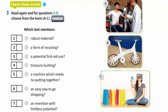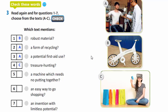Exercise 3. Read the text again and for the questions, choose from the text which text mentions: robust material – second; a form of recycling – first (A); a potential first aid use – A; treasure hunting – C; a machine which needs no putting together – B; an easy way to go shopping – C; an invention with limitless potential – B.